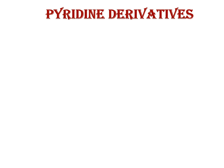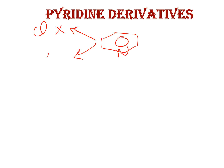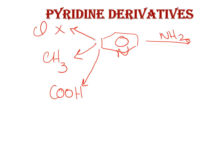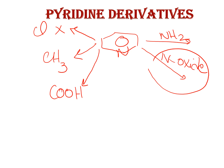In each class of heterocyclic compounds we will discuss some derivatives. In case of pyridine, we discuss all five possible derivatives: the pyridine ring carrying a halogen (chloropyridines), a methyl group (alkyl pyridines), a carboxylic group (carboxylic pyridines), an amino group (aminopyridines), and an N-oxide where oxygen forms a coordinate bond with the nitrogen. These are a very important class of compounds.